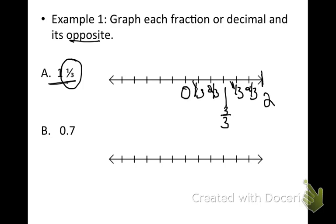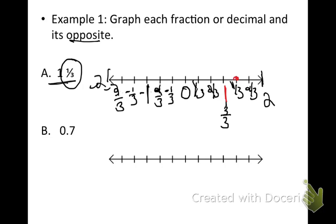I can do the same in the negative direction. This would be negative 1 third, negative 2 thirds, negative 1, negative 1 and 1 third, negative 1 and 2 thirds, and then negative 2. Sorry about my handwriting — it's hard with this stylus. I'm going to use red to graph 1 and 1 third here, and then negative 1 and 1 third down here.